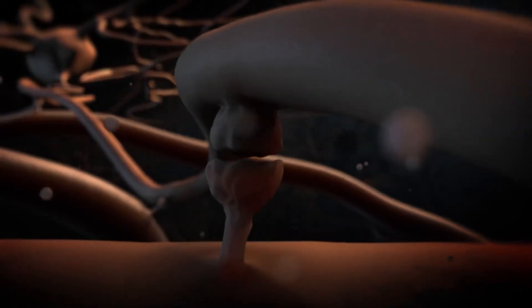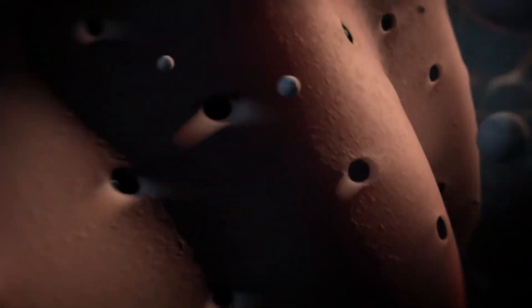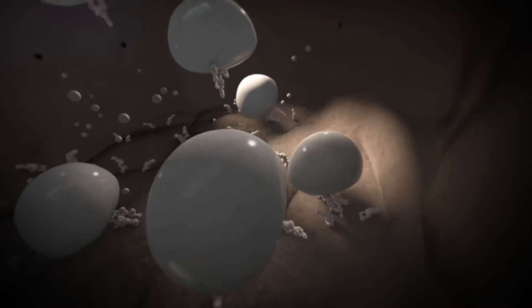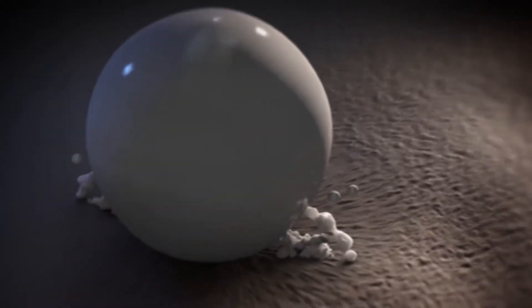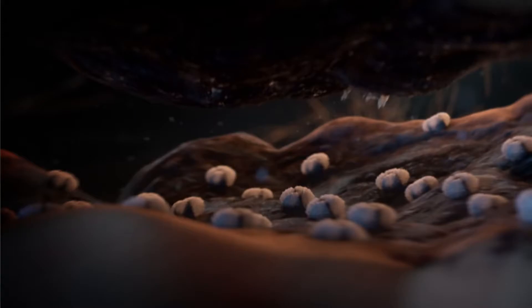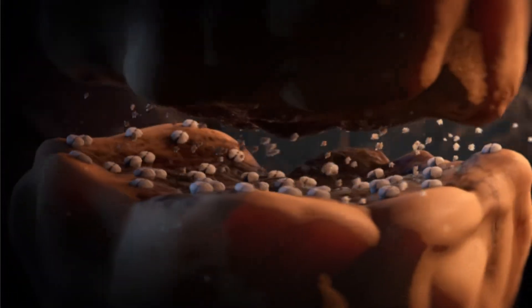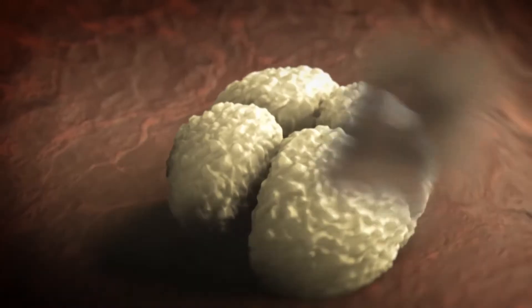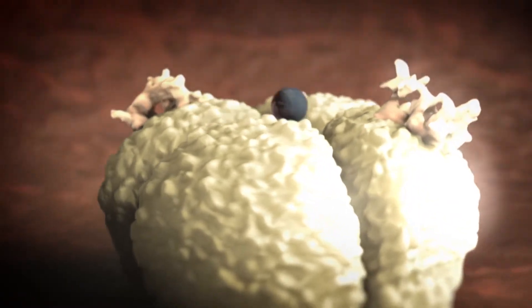At specialized contact sites called synapses, electrical signals trigger the regulated release of neurotransmitters stored in synaptic vesicles. These chemical messengers bind and activate postsynaptic receptors, initiating a new electrical signal in the next cell.